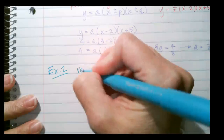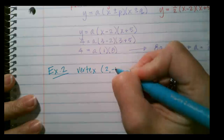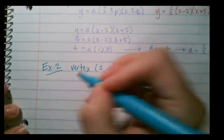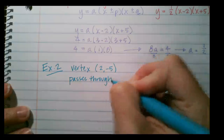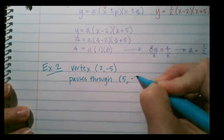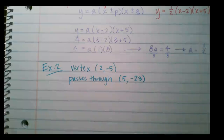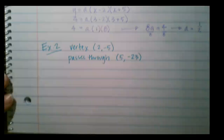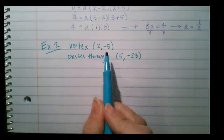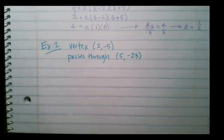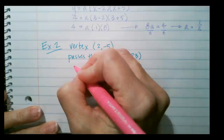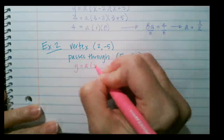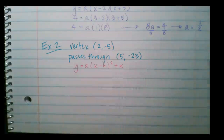Let's try example 2. This time the vertex is at (2, negative 5) and the parabola passes through the point (5, negative 23). Since I was given the vertex, I'm going to use vertex form, which looks like a times (x minus h)² plus k.